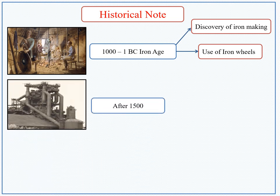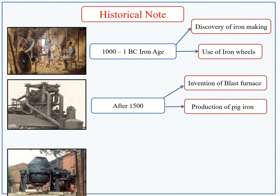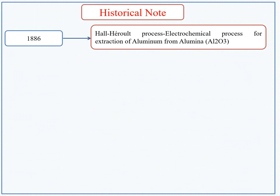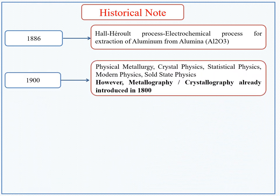After 1500, the blast furnace was invented and the production of pig iron took place from the blast furnace. In the year 1855, Sir Henry Bessemer discovered the steel-making route for the production of steel from iron. In the year 1886, the electrochemical process for extraction of aluminum from alumina was discovered, and the process was named the Hall-Héroult process. In 1900, the terms physical metallurgy, crystal physics, modern physics, solid-state physics, and statistical physics were first introduced.